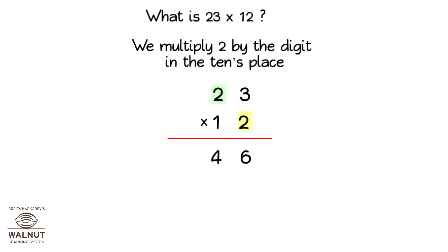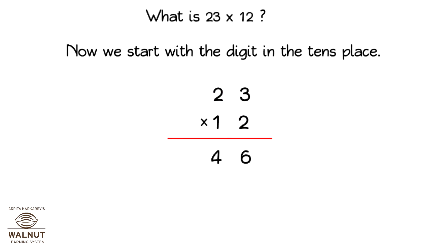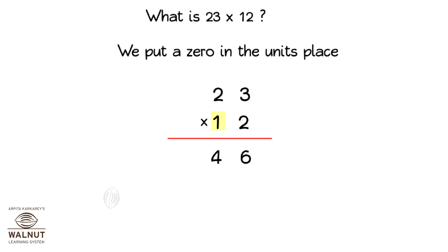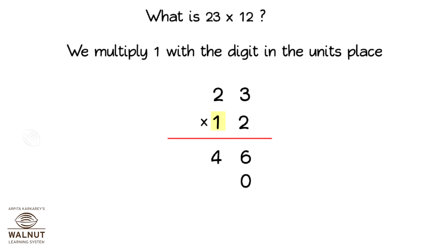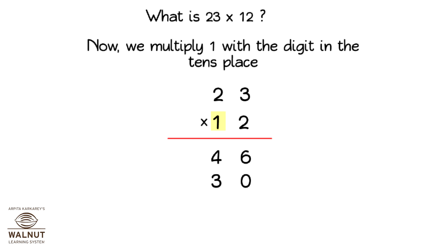Now we start with the digit in the tens place. We put a 0 in the units place. We multiply 1 with the digit in the units place. 3 into 1 is 3. Now we multiply 1 with the digit in the tens place. 2 into 1 is 2.